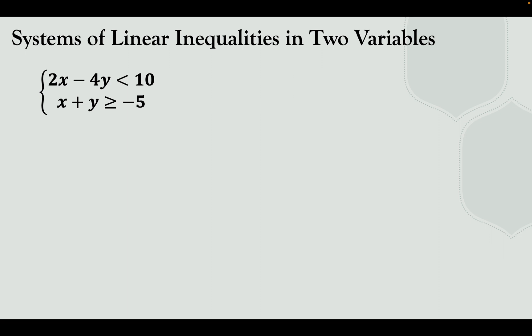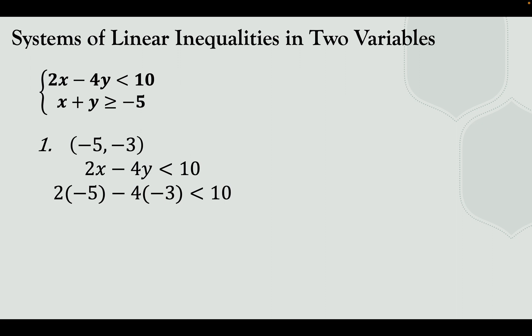Next example — the system: 2x minus 4y less than 10, and x plus y greater than or equal to negative 5. Let's try the ordered pair negative 5 and negative 3. Substituting into the first inequality: 2 times negative 5 minus 4 times negative 3 less than 10, gives negative 10 plus 12, which is positive 2. Is 2 less than 10? Yes, that is true.